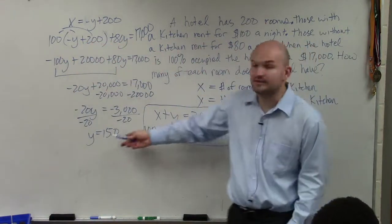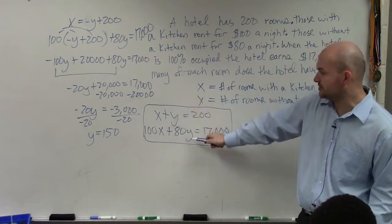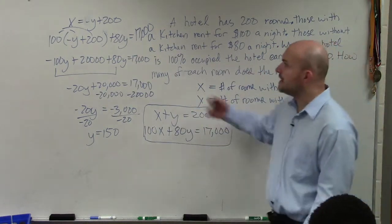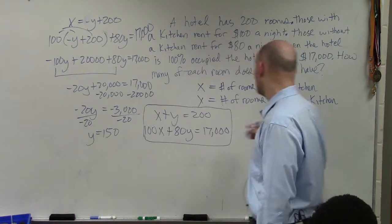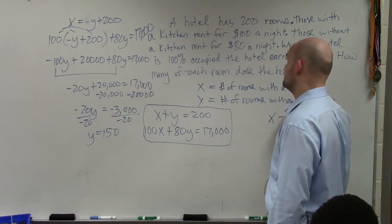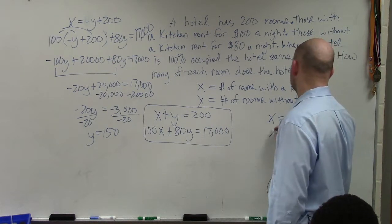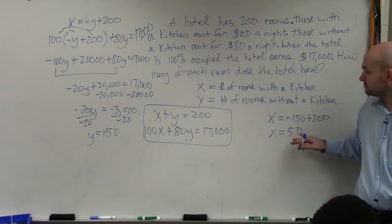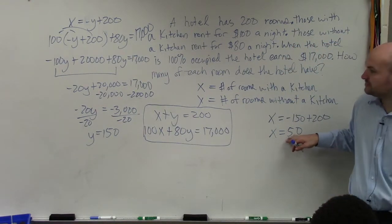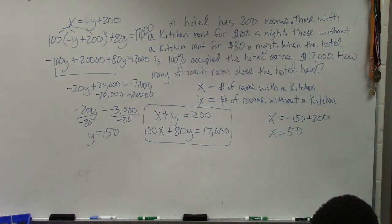So now I know that the total number of rooms that do not have a kitchen is 150. Now to find the value of x, I'll plug in 150 for y. So I say x equals negative 150 plus 200. x equals 50. So therefore, the number of rooms that have a kitchen is 50. The number of rooms that do not are 150. Make sense?